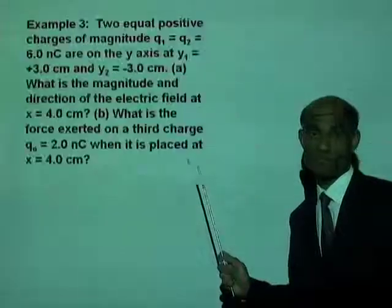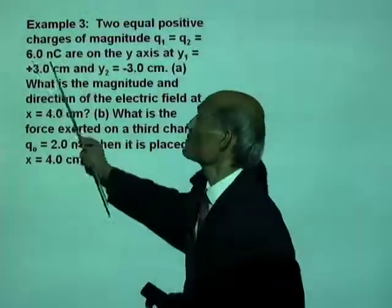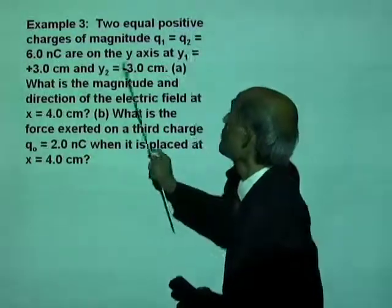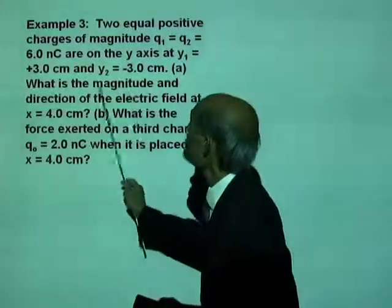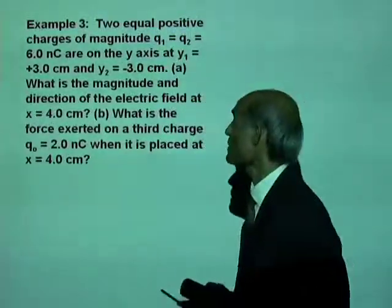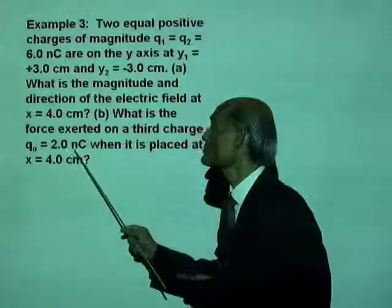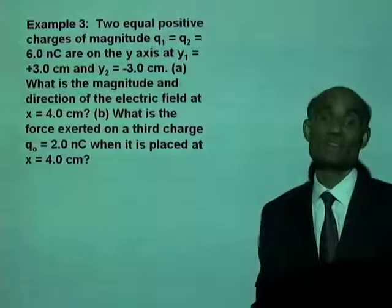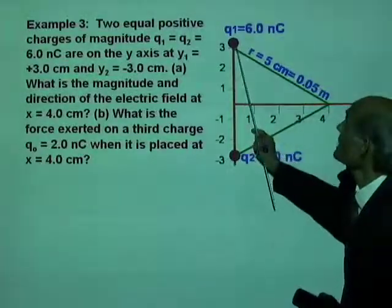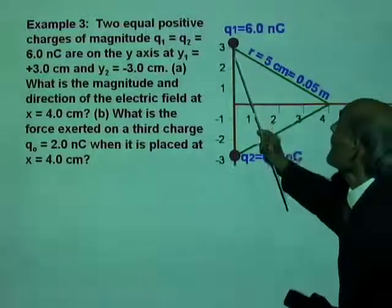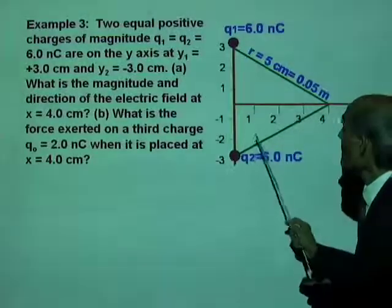Let's do another one. Two equal positive charges of magnitude Q1 equal to Q2 equal to 6 nanocoulombs are on the Y-axis at y1 equal to positive 3 centimetres and y2 equal to negative 3 centimetres. You have charge Q1 equal to 6 nanocoulombs at y equal to positive 3 and Q2 equal to 6 nanocoulombs at y equal to negative 3. These are centimetres, so you need to convert them to metres.